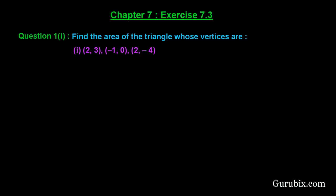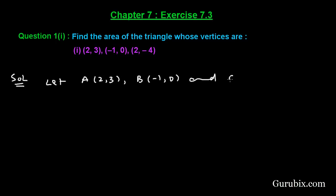Welcome friends, let us solve the first part of question number 1 of exercise 7.3 of chapter 7. The question says: find the area of the triangle whose vertices are (2, 3), (-1, 0), and (2, -4). Let A(2, 3), B(-1, 0), and C(2, -4) be the given points.